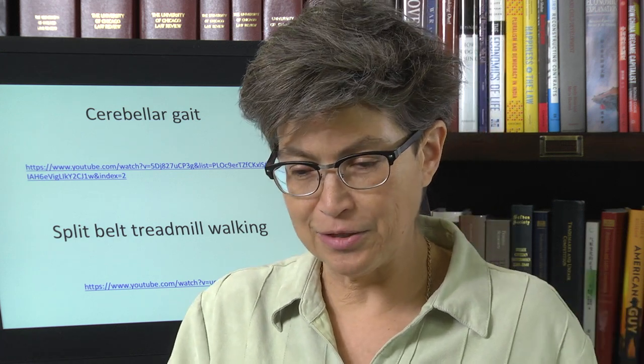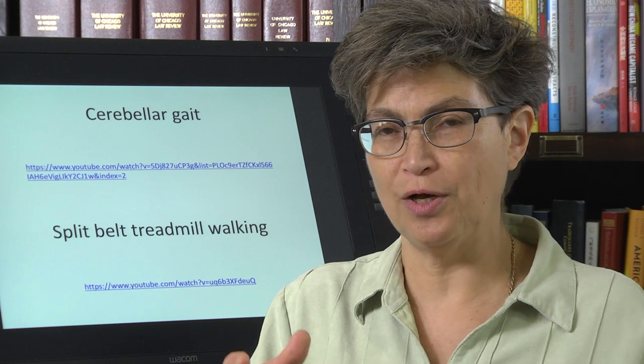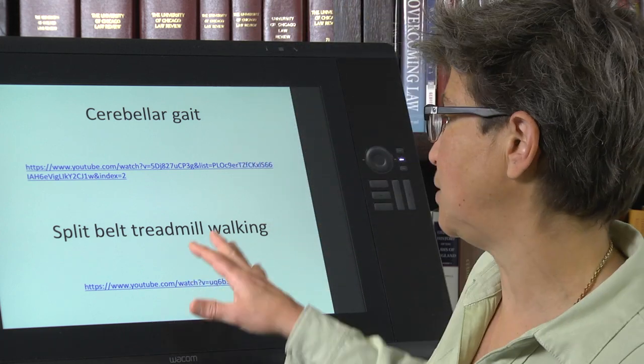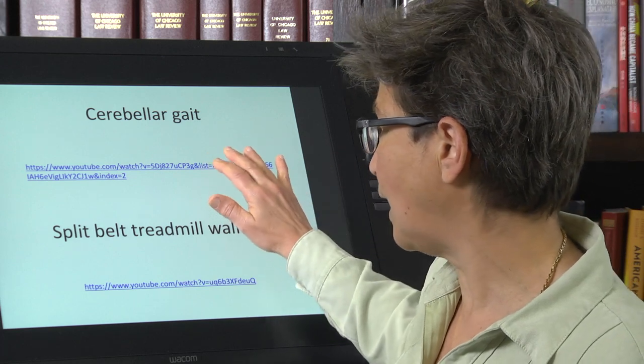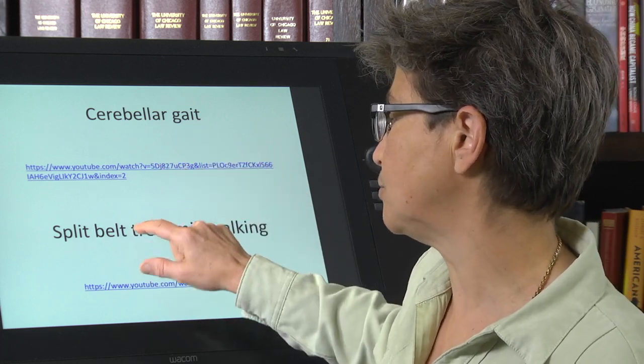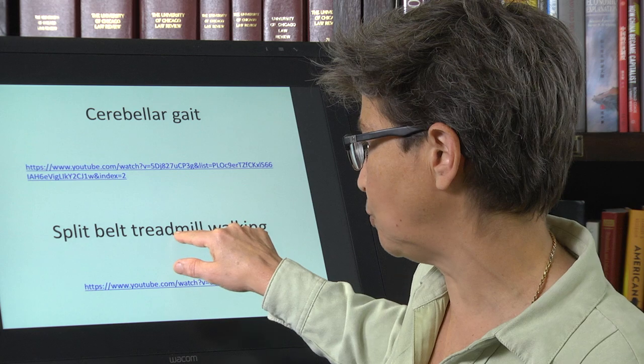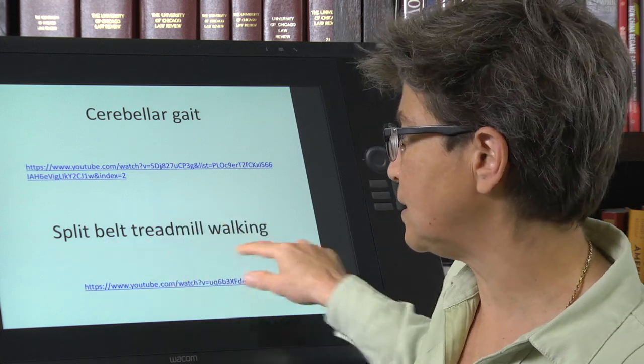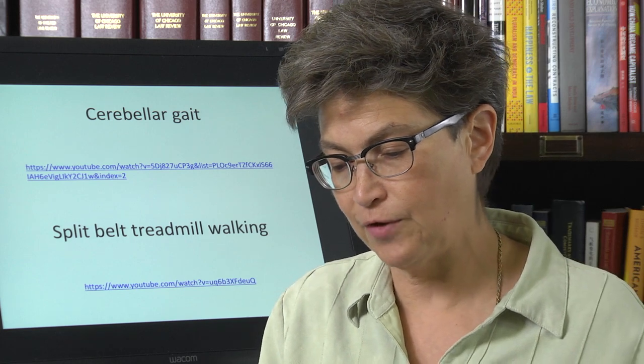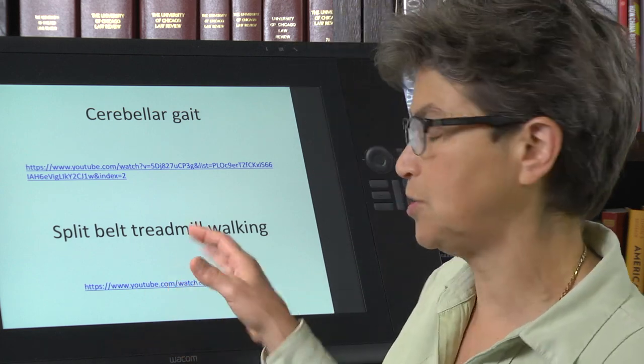The vermis is integral to gait. To understand the role of the cerebellum in gait, it's entertaining to look at the split belt treadmill walking. This is a series of experiments by Amy Bastian.